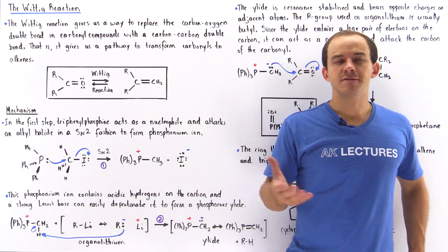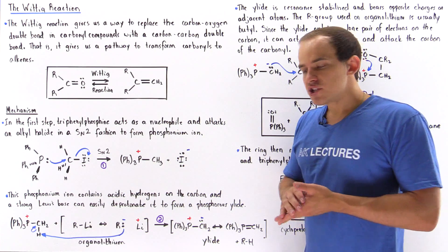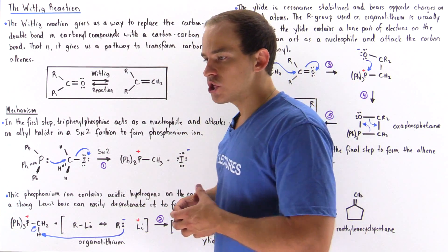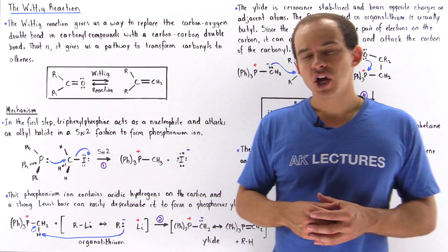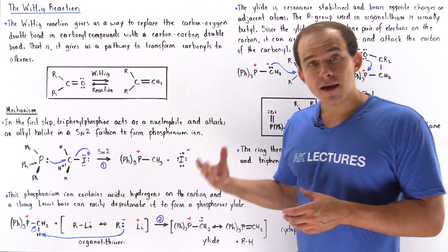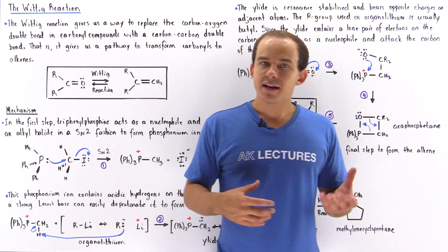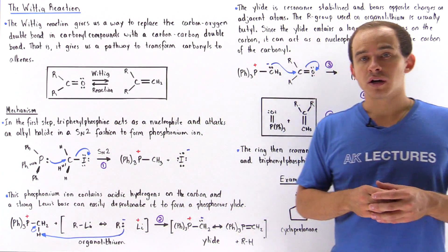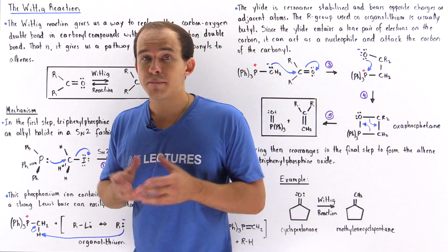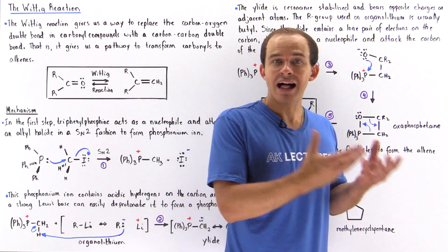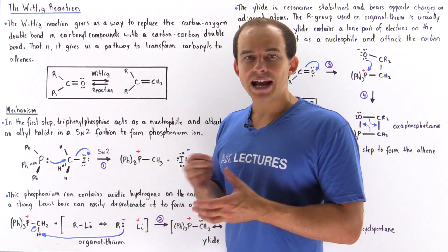So far we discussed many different types of reactions that deal with the carbonyl group. We examined how alcohols can react with carbonyl groups to form hemiacetals and acetals, and how amines can react with the carbonyl group to form amines and enamines. Now we're going to talk about another important reaction that allows us to produce alkenes from carbonyl groups. This is known as the Wittig reaction.